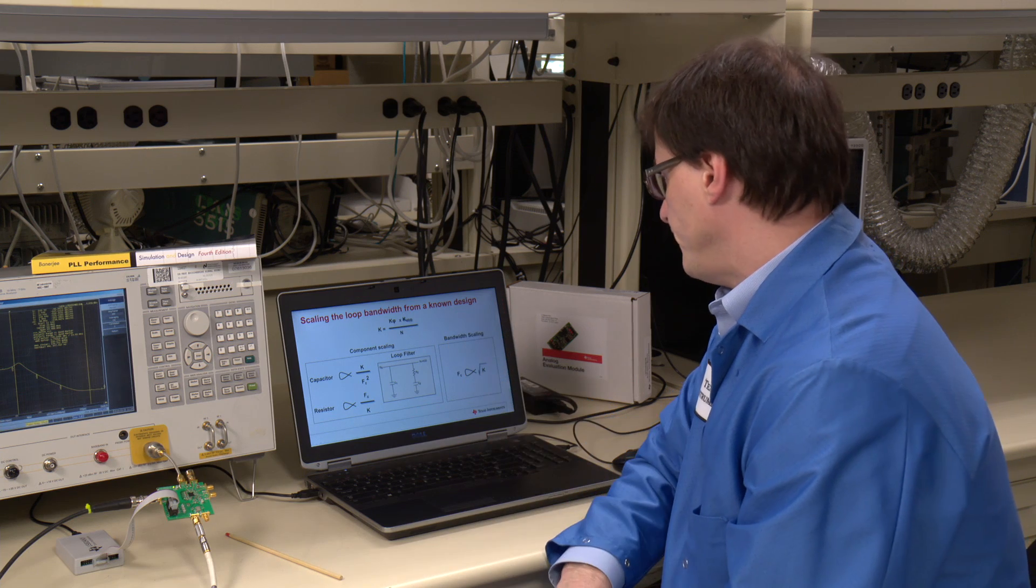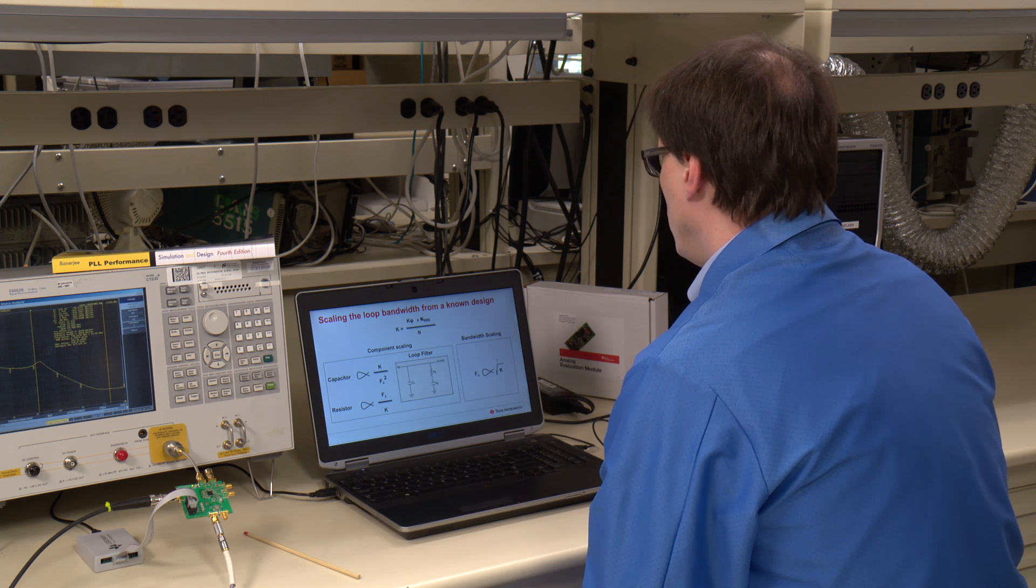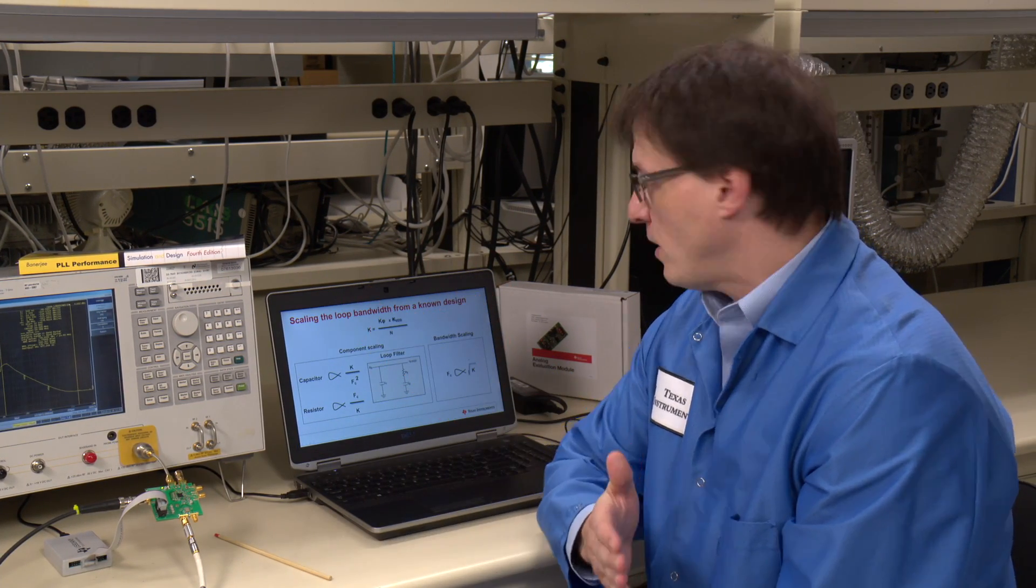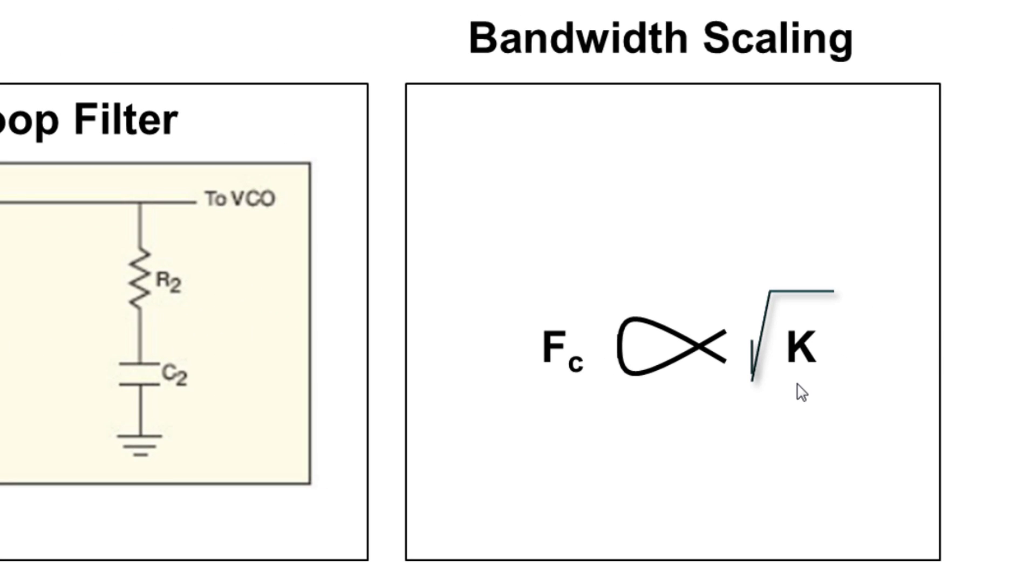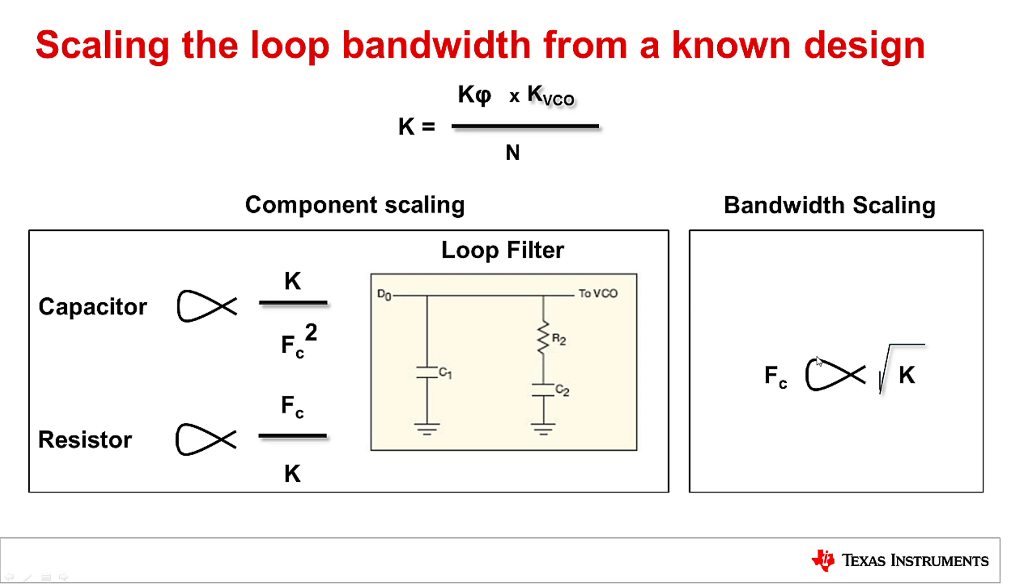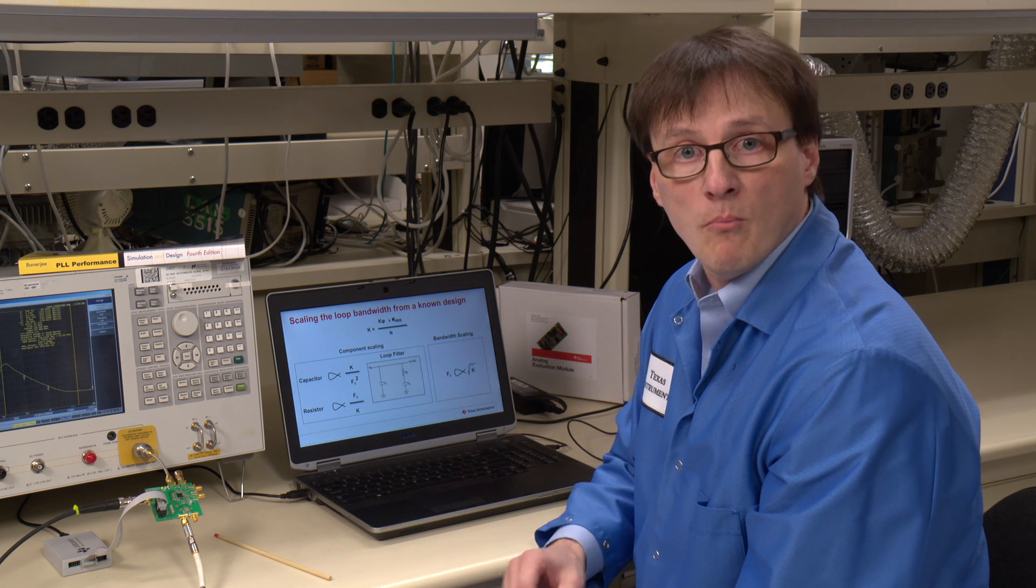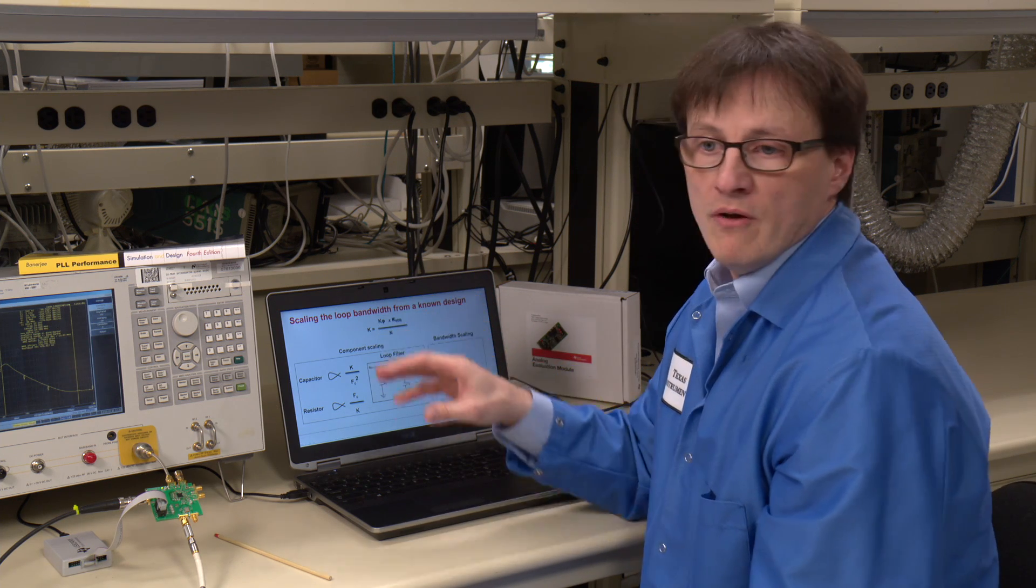The final trick or the final memo to the loop bandwidth is what's happening if my KVCO changes as I change tuning frequency. What does that do to the loop bandwidth? Well, the loop bandwidth to a first order changes with the square root of the K factor. Anything that changes in the K factor is going to be proportionally changed in loop bandwidth by the square root of that factor. So let's say that K factor doubles, well the loop bandwidth is going to increase by about a factor 1.4, square root of 2.